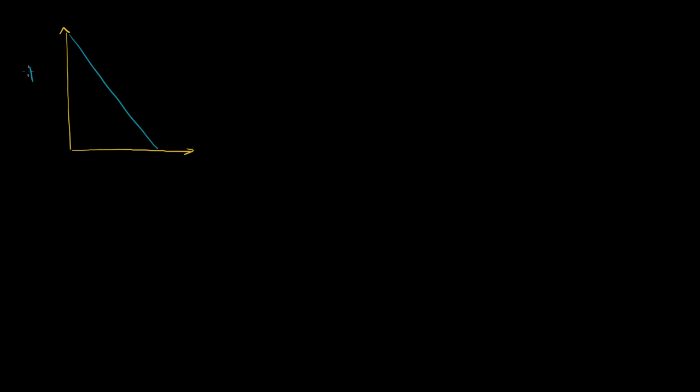So the demand curve looks like that. This is price. This is quantity. That is demand right over there. I'm going to show that the marginal revenue curve has twice the slope. It is twice as steep as this, and it's really twice the negative slope.